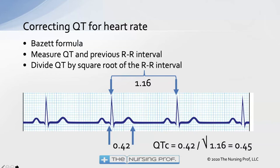In order to measure the QT interval effectively, we need to correct for heart rate because the repolarization period shortens as heart rate picks up. Looking at these complexes, there's a relatively long repolarization cycle, and if we had a heart rate of maybe 150, we'd be bouncing those QRS complexes right on the T waves of the preceding complex. As heart rate goes up, the time to repolarize decreases.